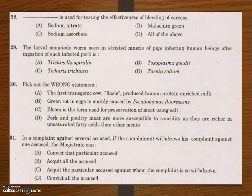The correct term for preservation of meat using salt is 'salting.' The first transgenic cow Rossi (1997) produced milk enriched with alpha-lactalbumin, containing about 2.4 grams of human protein per liter.